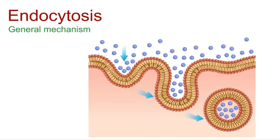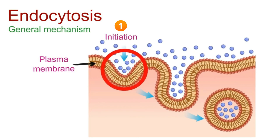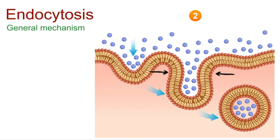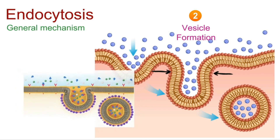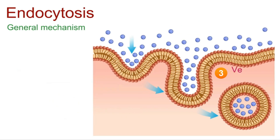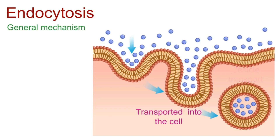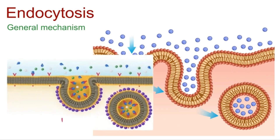The general process of endocytosis involves the following steps. The plasma membrane invaginates, forming a pocket around the target material. The pocket pinches off from the plasma membrane, forming a vesicle. The vesicle is often coated with proteins like clathrin in the case of clathrin-mediated endocytosis. In the case of clathrin-coated vesicles, the clathrin coat is removed.